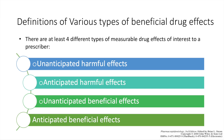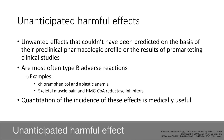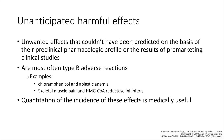There are at least four different types of measurable drug effects of interest to a prescriber. The first is unanticipated harmful effects — these are unwanted effects of drugs that could not have been predicted on the basis of the preclinical pharmacologic profile or the results of pre-marketing clinical studies. These are mainly type B adverse effects, which are unpredictable and independent of the dose.